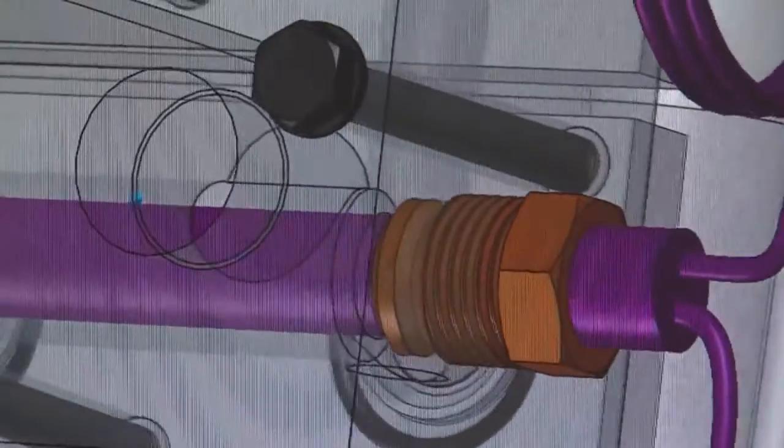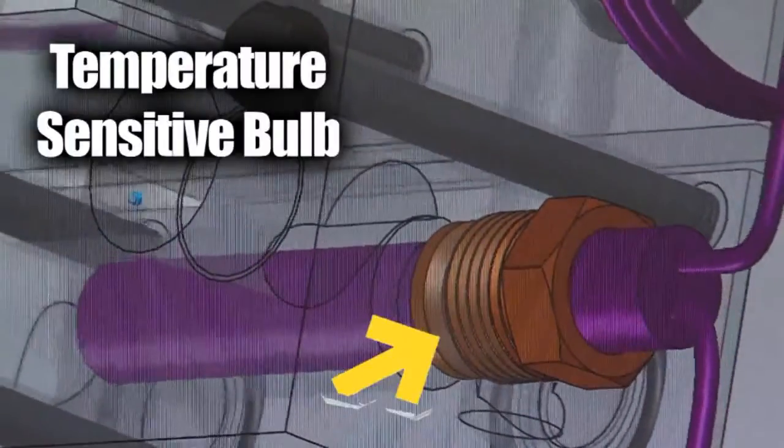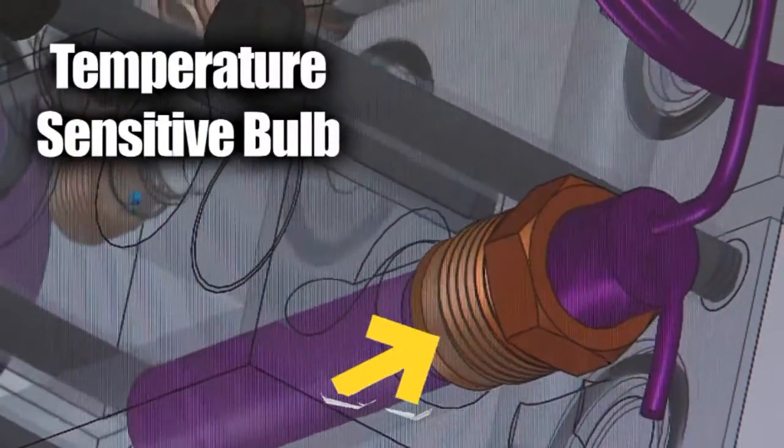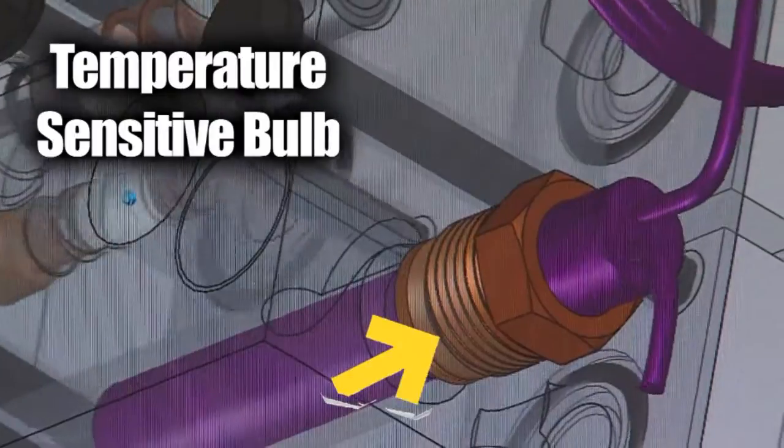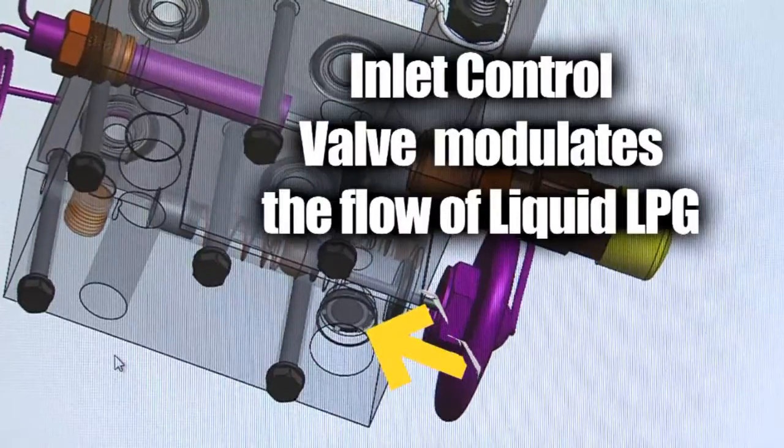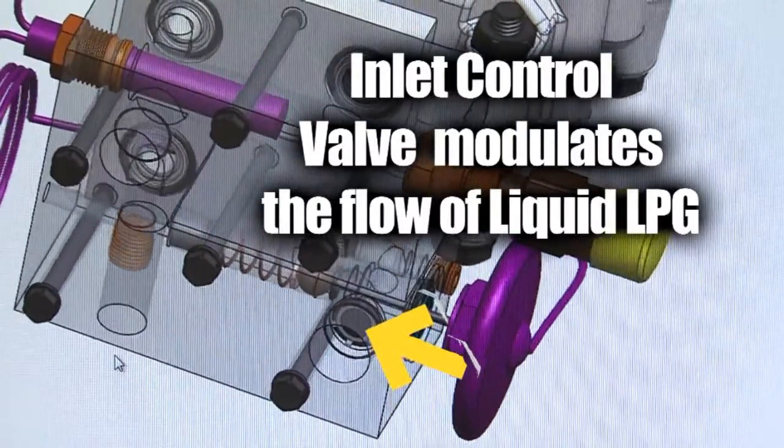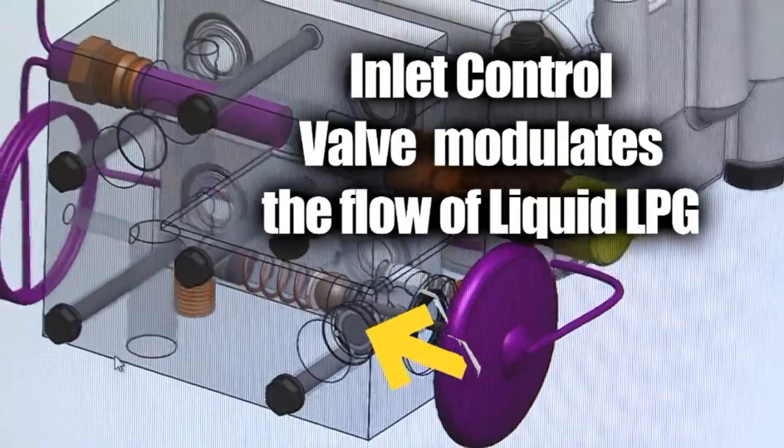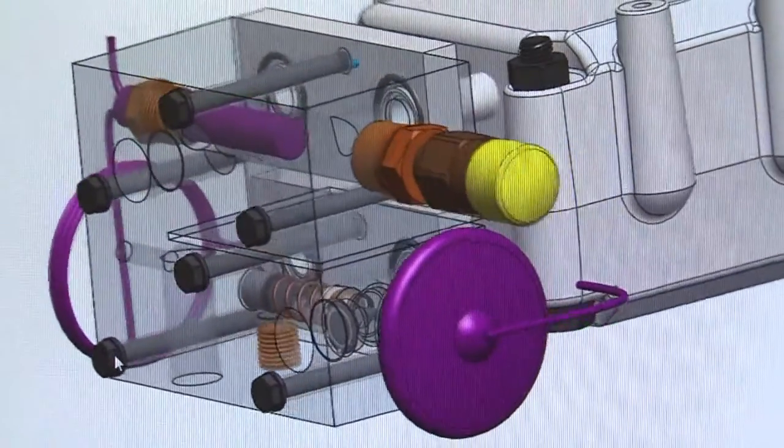The temperature of the LPG vapor exiting Zimmer is monitored by a temperature sensitive bulb. This bulb provides feedback to Zimmer's inlet control valve. The inlet control valve then modulates the flow of liquid LPG into the vaporizer relative to the vapor temperature of the exiting LPG.